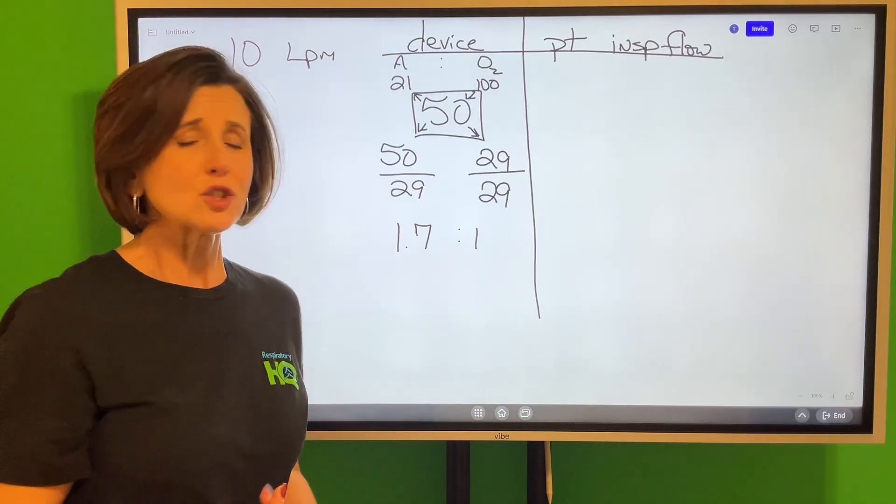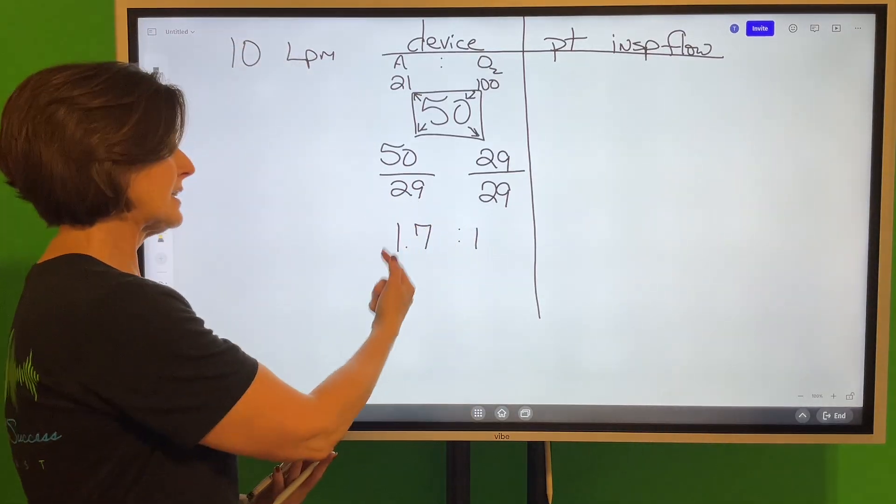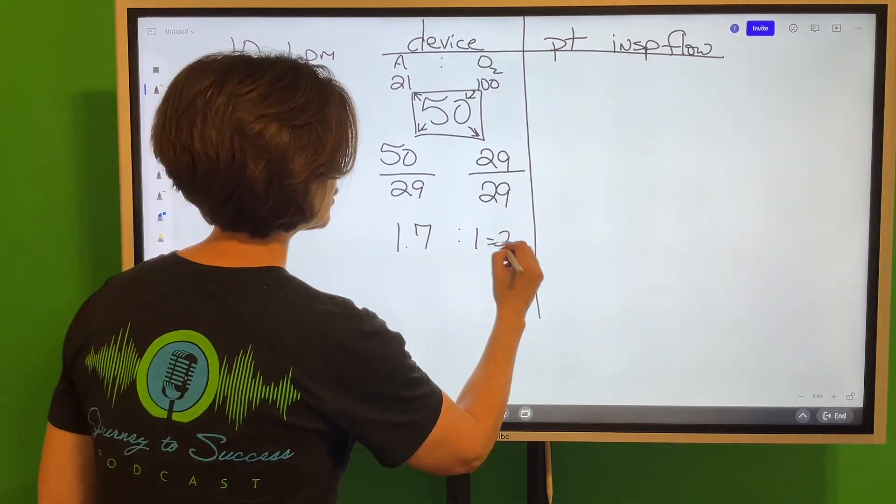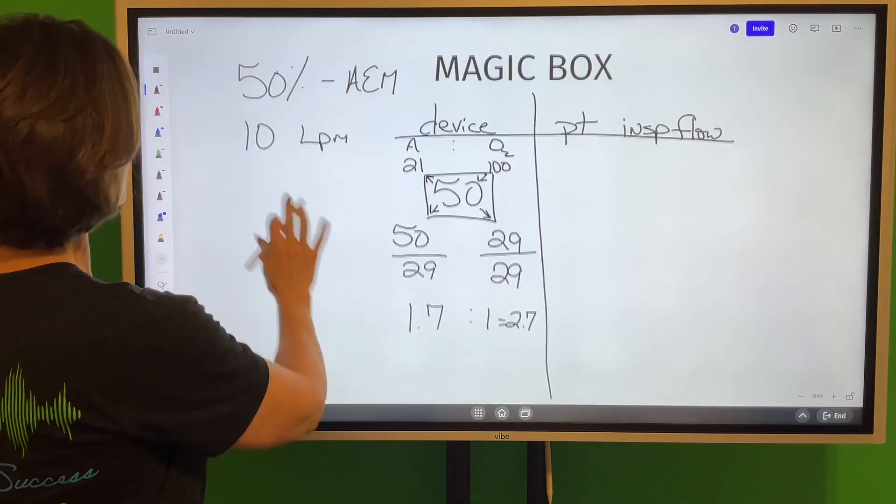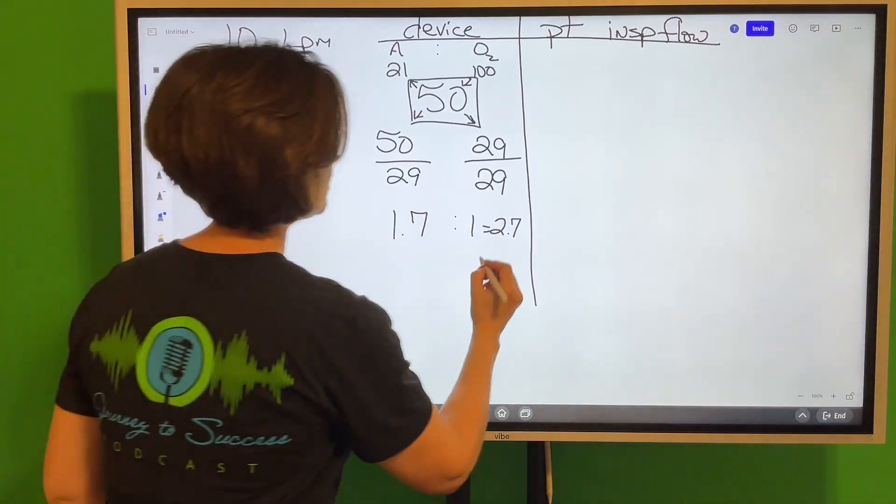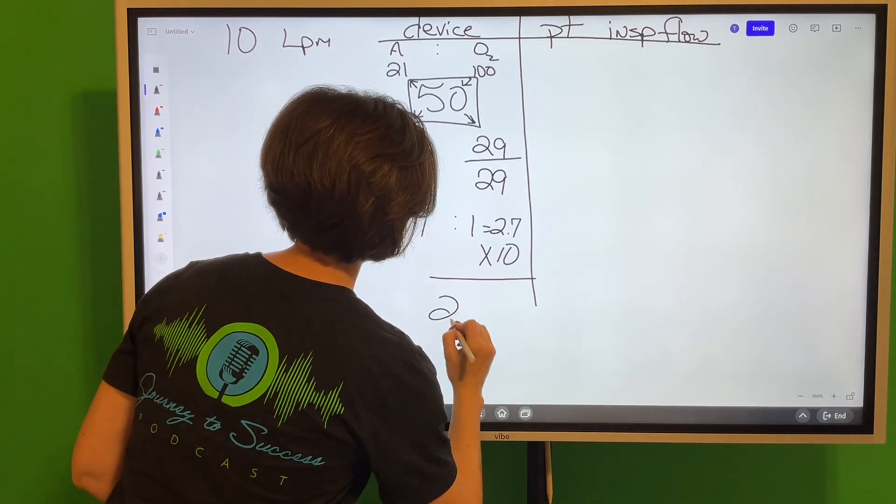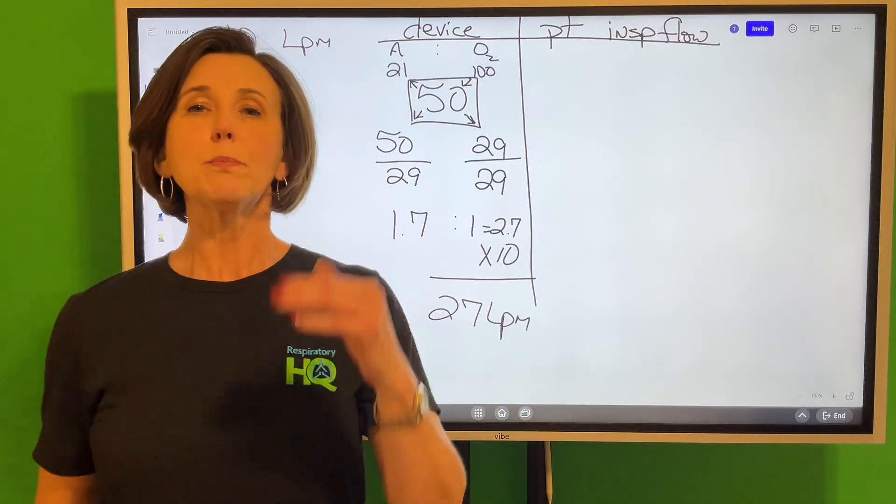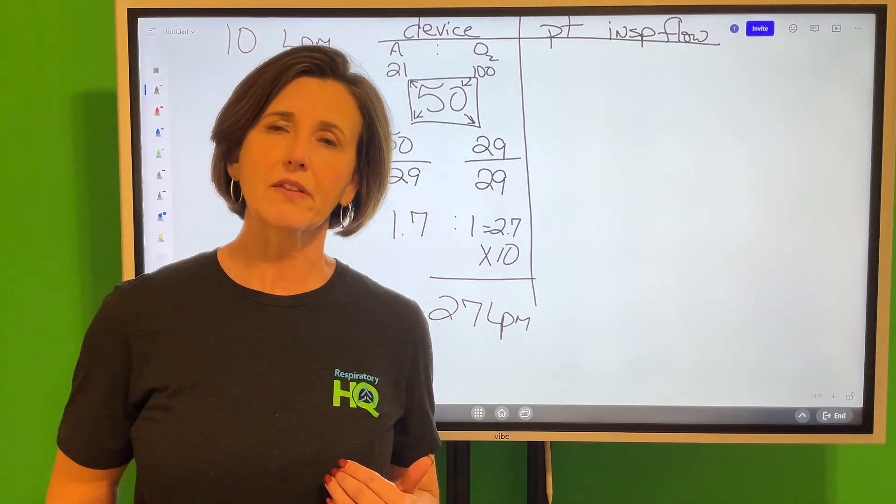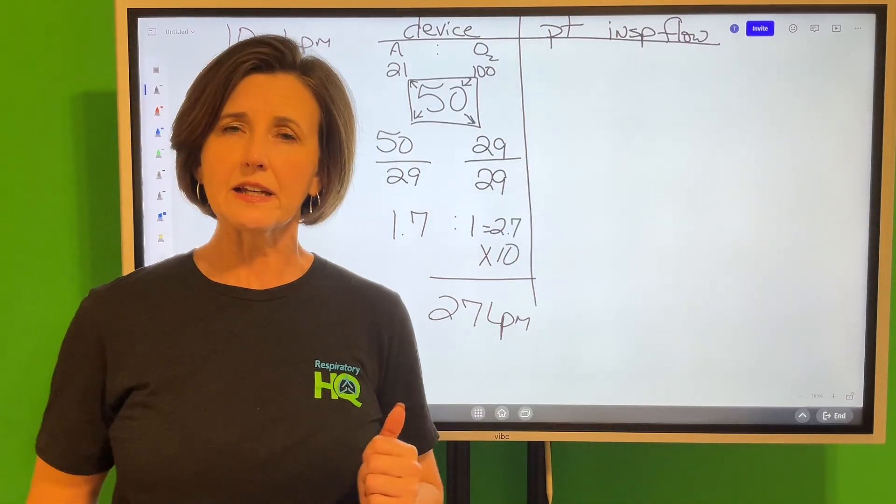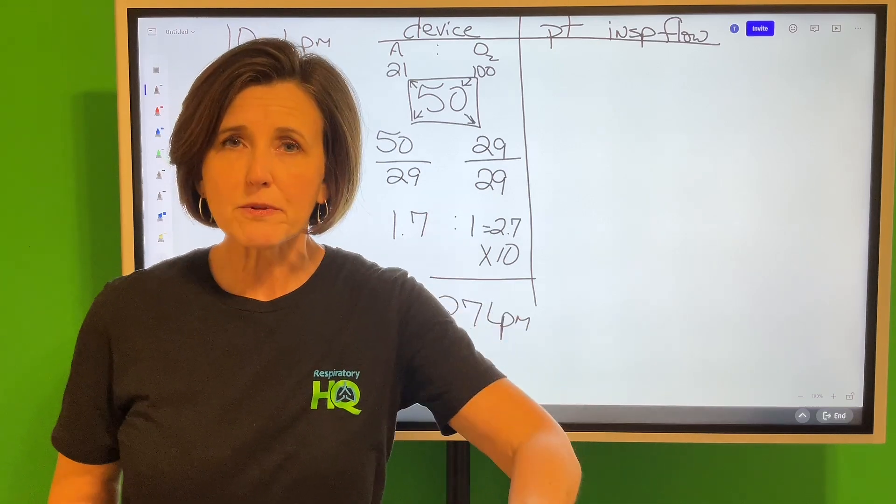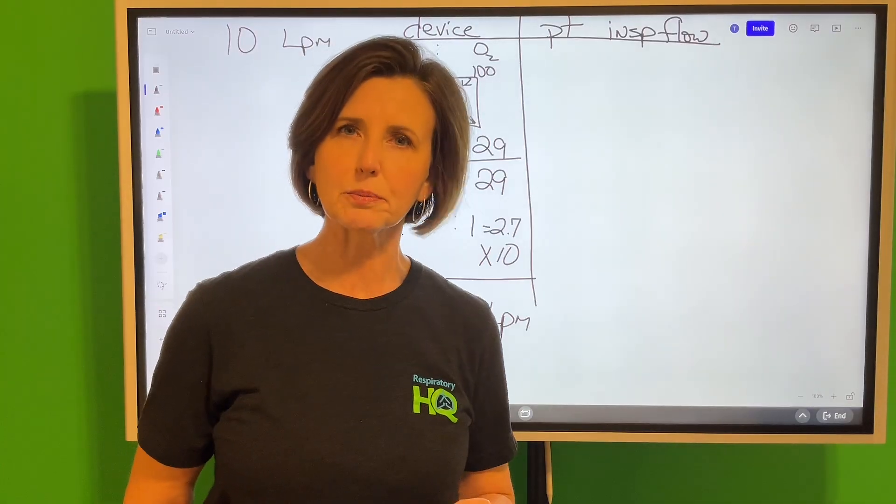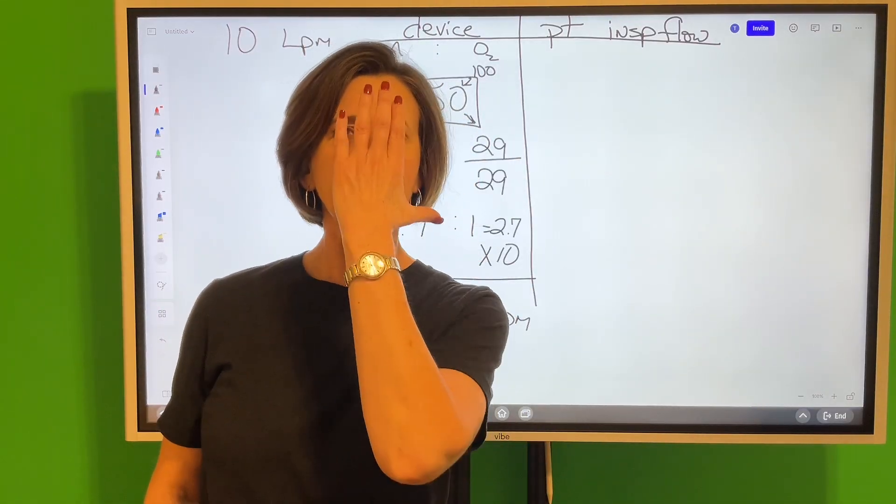Okay, we're running it at 10. So we don't have to keep going 10 equals this, 10 equals that. Here's the quick way to do this: add these two parts together, that's 2.7, and then multiply by the flow on the flow meter. 2.7 times 10 is 27 liters per minute. Here's what that means: this means when you put that 50% Venturi mask on that patient and you turn it on to 10, that 50% is coming out of that mask at a speed of 27 liters per minute.